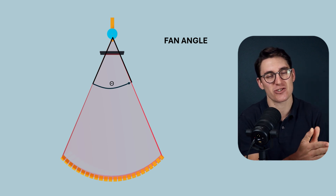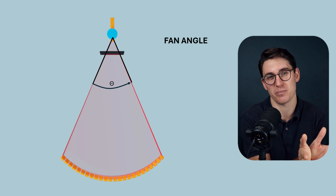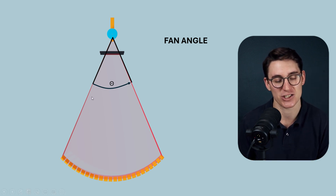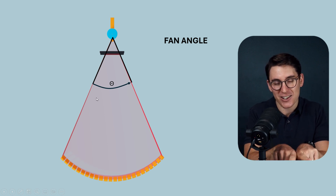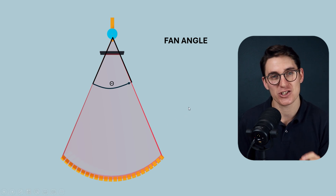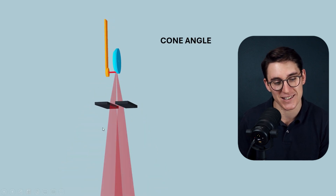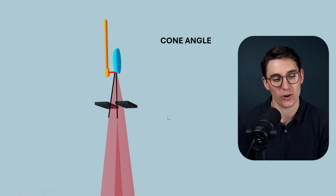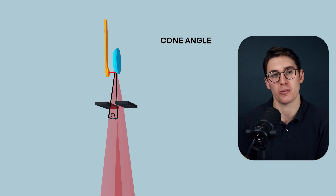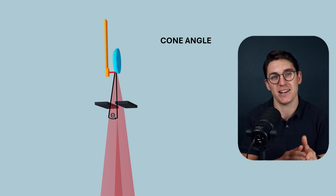When we look at third generation CT scanners, we describe that x-ray beam as being a fan beam — though technically that's not correct. A fan beam shouldn't have any width in the z-axis. The fan angle is the angle of the beam in the x-y plane, the axial plane cutting across the patient. In fact, third generation CT scanners do have some width in the z-axis, and this angle created is what's known as the cone angle. The third generation x-ray beam is technically a narrow cone beam, made narrow by collimators.